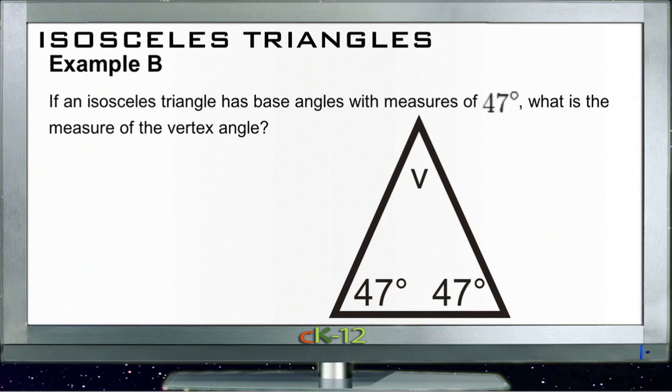Example B says if an isosceles triangle has base angles that measure 47 degrees, what is the measure of the vertex angle? Well, if you recall, all triangles have a total of 180 degrees on their interior angles.